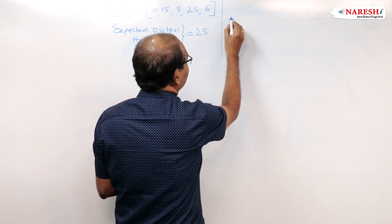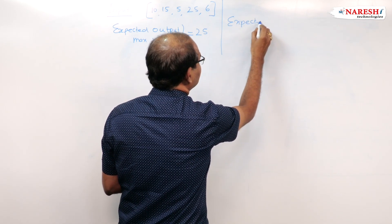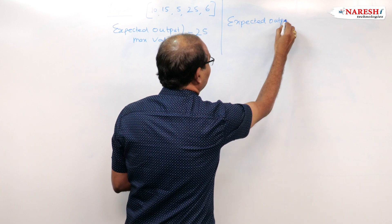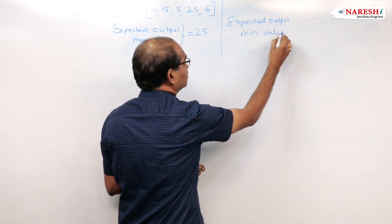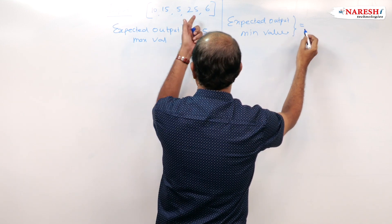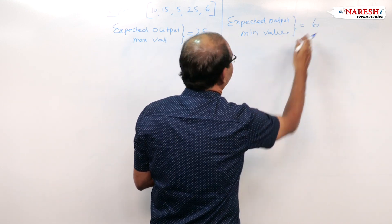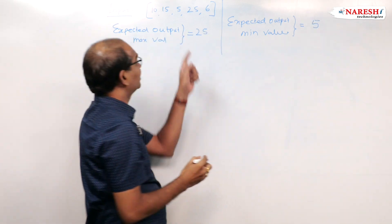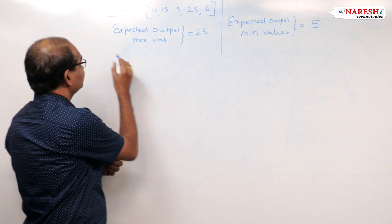The expected output for minimum: I want to find out the min value. The minimum value here is 5. So, let us find the logic for it.